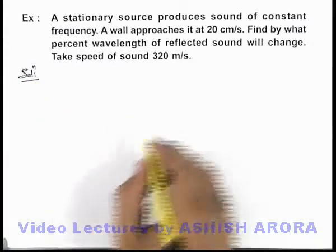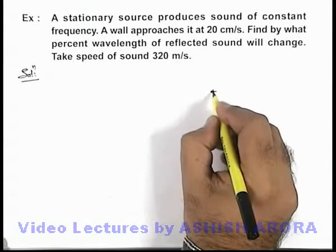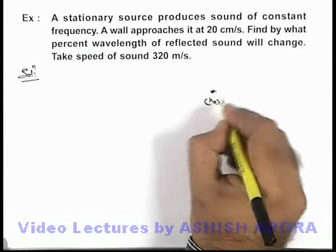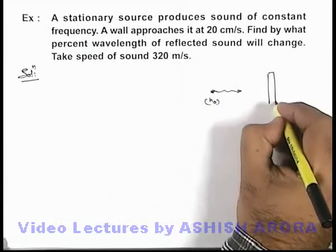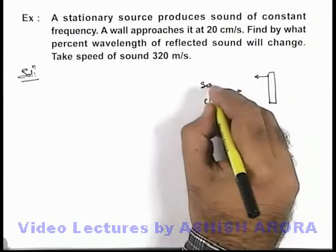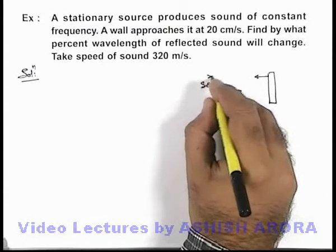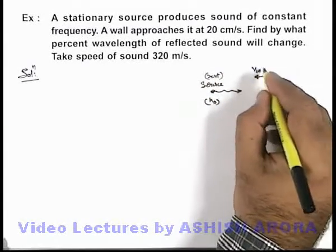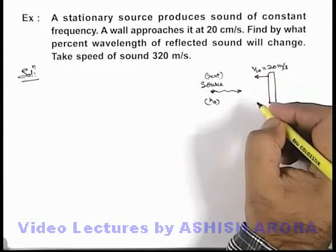Here, if we analyze the situation, we can take there is a source of sound which is producing a frequency n₀. In front of it there is a wall which is moving towards the source. Here we can take this source to be at rest, and the wall is moving with the speed vw which is given as 20 meters per second.